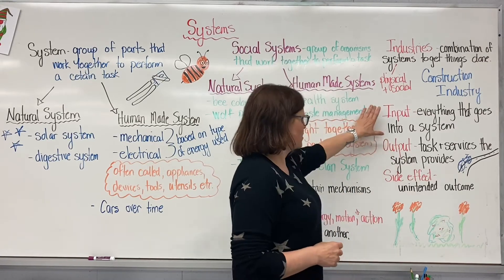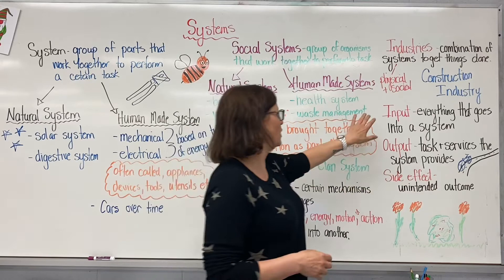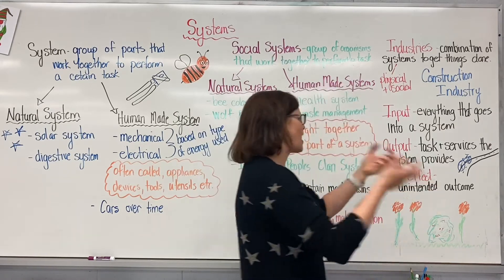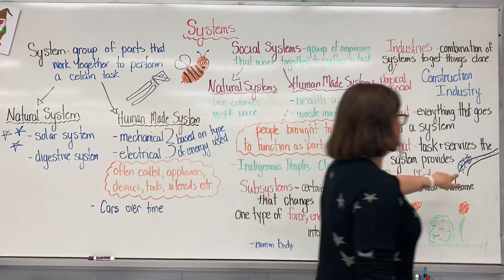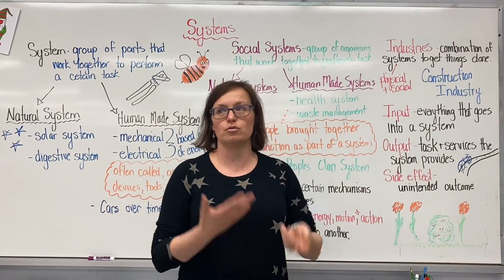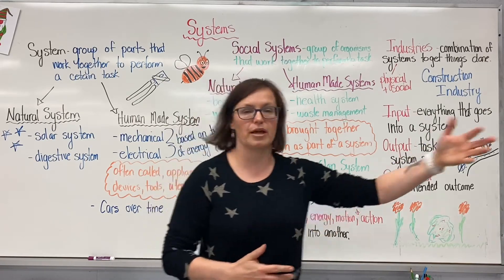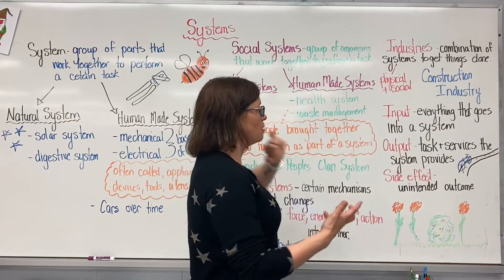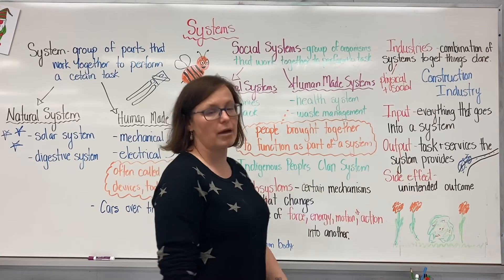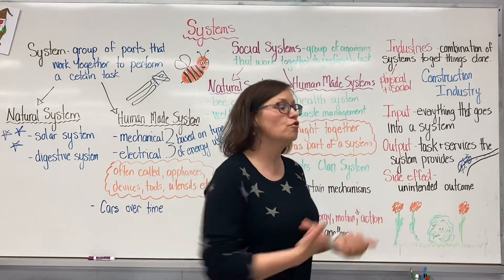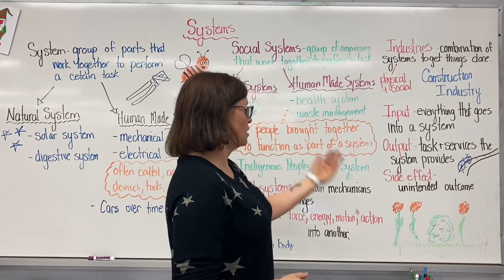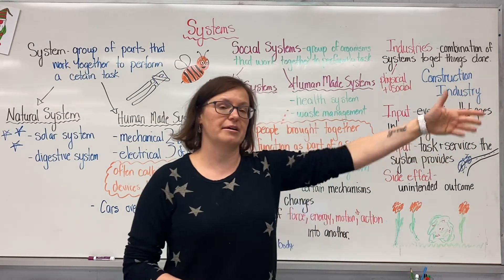In a system there are always inputs, outputs, and side effects. An input is everything that goes into the system to make it work, and the output is the task or service that's provided by the system. If I think about a bicycle — a bicycle is a system created for transportation to get a person from one place to another. The input is my force on those pedals, me moving my bicycle. The output is the movement of that bicycle from one place to another — getting me to a certain location.